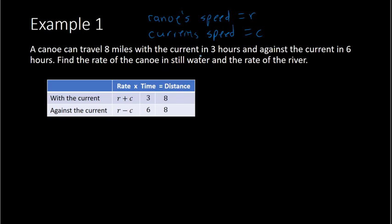So from here, we have two different equations. Rate times time equals distance. So we have three times R plus C equals eight. So our first equation is based off that. We have three times the R plus C. That equals eight. Rate times time equals distance. Second equation can be derived from the second row. We do six times R minus C equals eight. So those are my two equations.